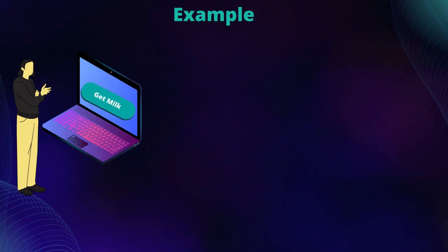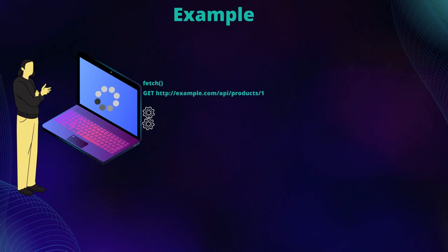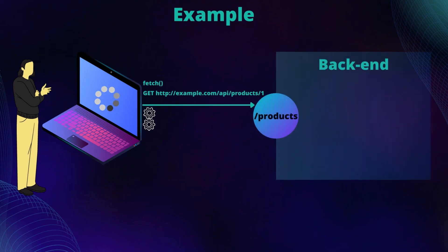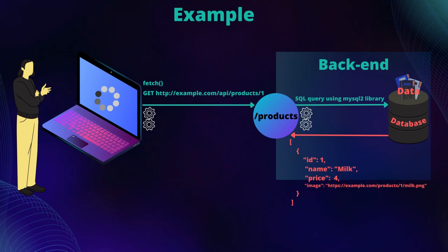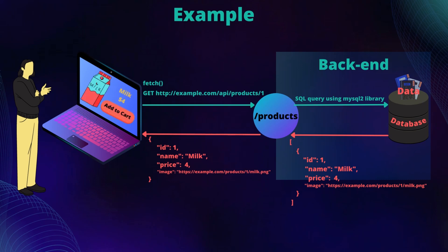Let's go through it again. You open example.com and click the 'Get Milk' button. Behind the scenes, the front end makes an HTTP GET request to the product's API endpoint in the back end, along with the product ID. The back end sends a query to the database, which searches for that specific product. Once found, it sends the data back to the web server, which then sends it to the front end through the API endpoint. The front end renders this data for the user — and that's, in a nutshell, how the web works.